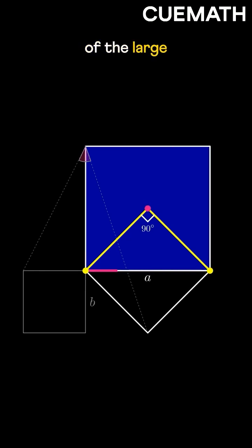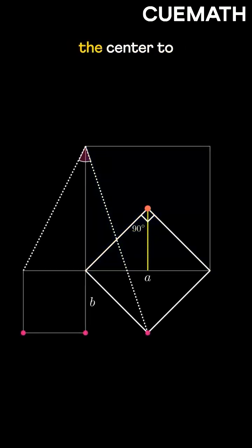So this point is the center of the large square. This length from the center to the square's side must be half of A. By symmetry, this length is also A by 2.